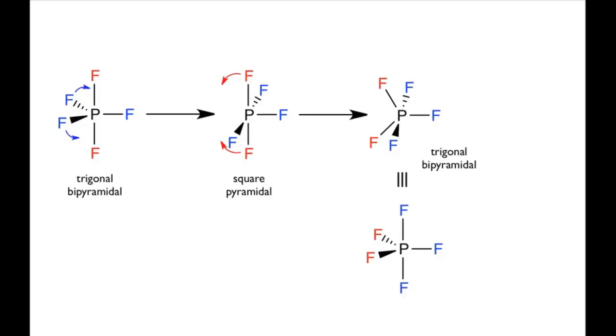A molecule that can rearrange its shape is known as fluxional, and the process involved in this particular type of fluxionality is called the Berry pseudo-rotation.